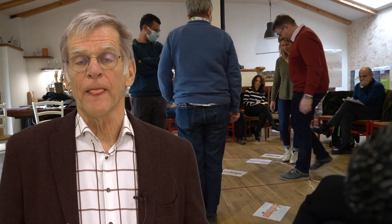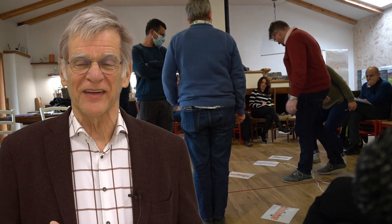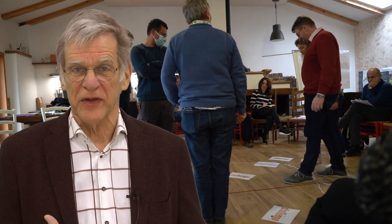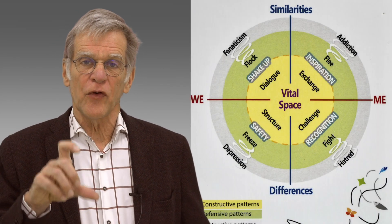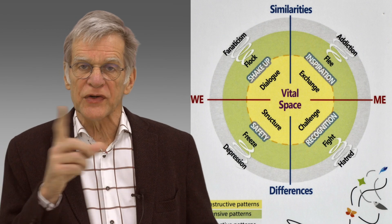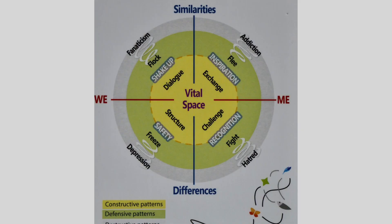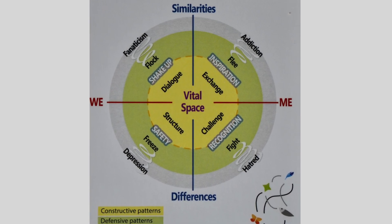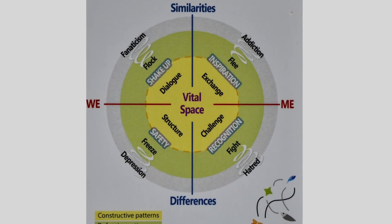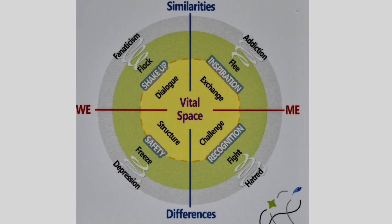That is what you want, but it is not just given — you can do something for it. The model shows four different quadrants of interaction, and in each quadrant you need to do something different. Making that distinction helps you know what to do to get into this vital space.